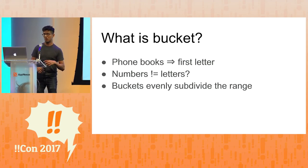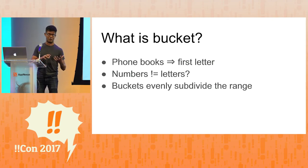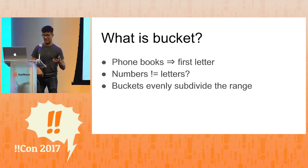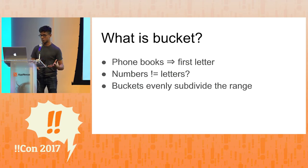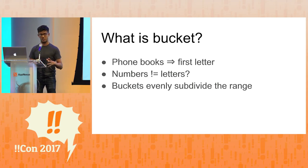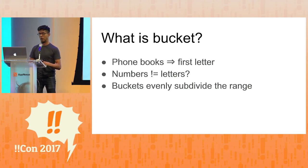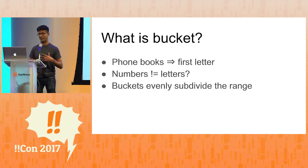What is a bucket though? Phone books have letters, so you can bucket by the first letter — alpaca, alphabet, Arthur are all in the A bucket; cantaloupes, cactuses, Charles are all in the C bucket. But numbers aren't letters. So it's going to be a different approach, a different kind of bucket. We'll have a range — a min and a max in our sorted set — and we'll define buckets that evenly subdivide the range. I kind of glaze over when I hear about math, so now we're going to go to visuals.